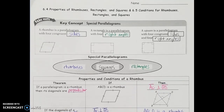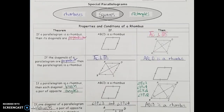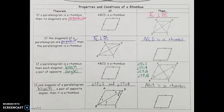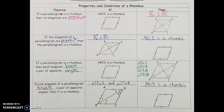We have more rules and properties that come with these as well. Looking at a rhombus first — if a parallelogram is a rhombus, then we know that the diagonals are perpendicular. So the diagonals will bisect each other because it's still a parallelogram, but they'll also be perpendicular to each other. And just like with our other properties, we can use the converse: if the diagonals are perpendicular, that tells me I have a rhombus.